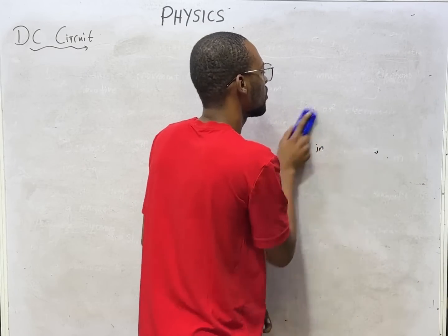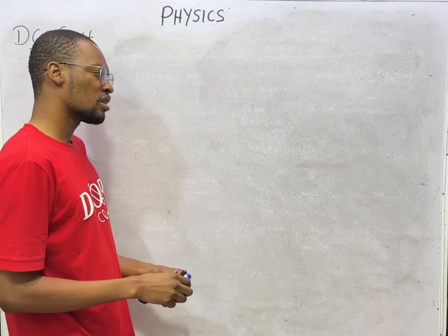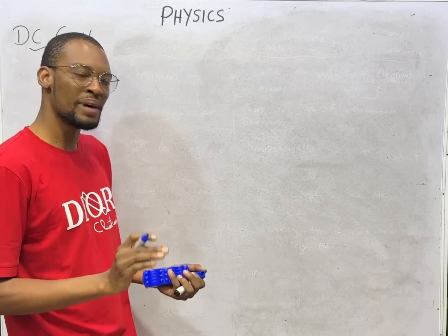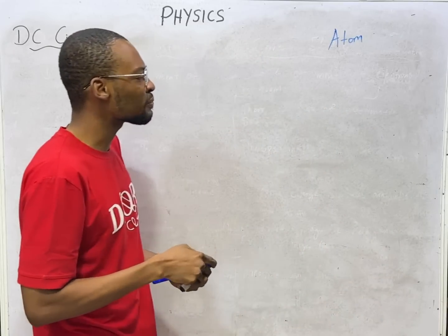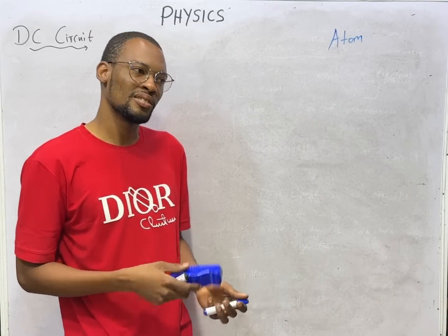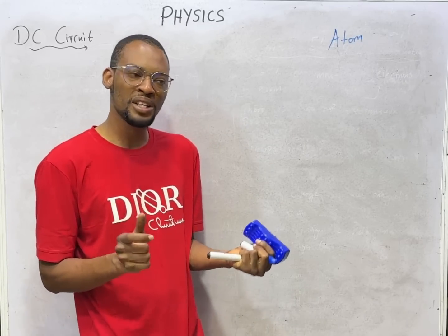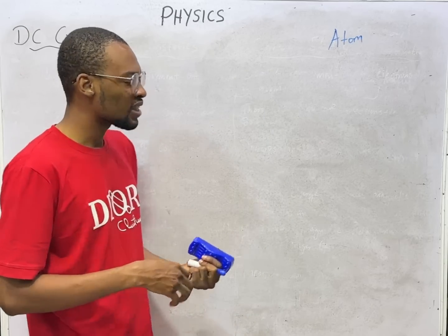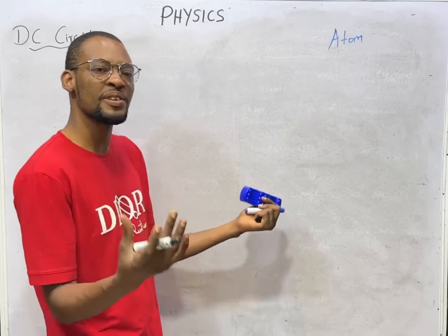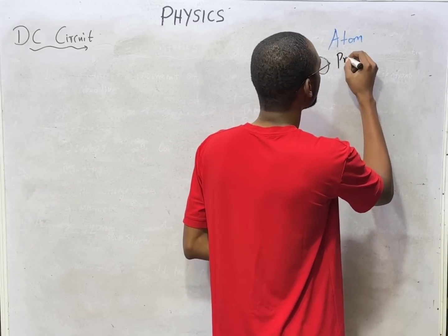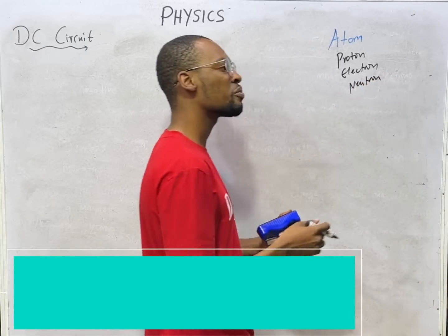How is electricity produced? This takes us back to the concept of the atom. An atom is the smallest particle of matter that can take part in a chemical reaction. Atoms are very small, yet they have even smaller parts called subatomic particles: proton, electron, and neutron.